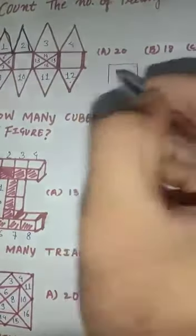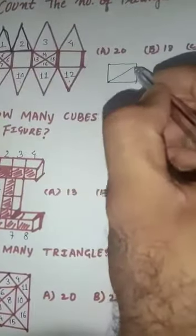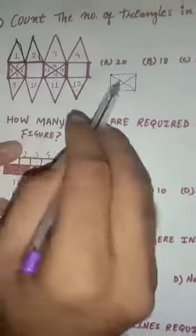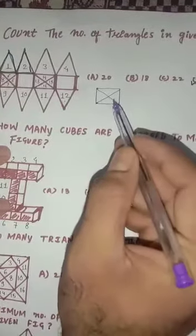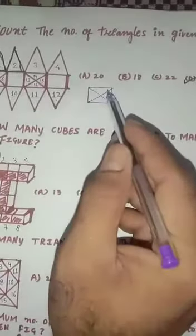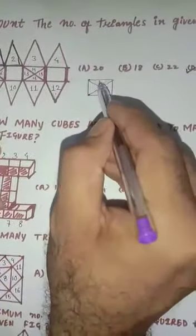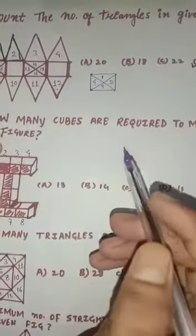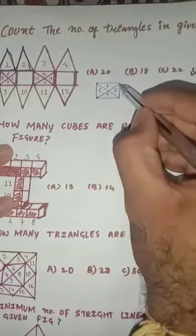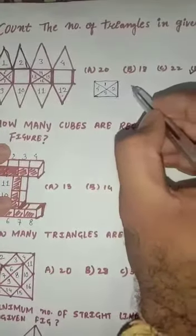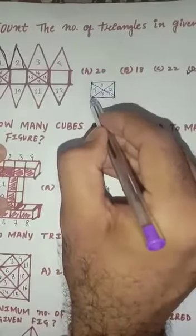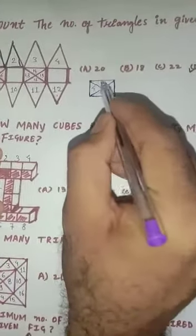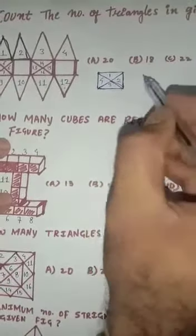So let's take this cube — it is divided into two parts. I've taken the same figure here and trying to find out how many triangles are possible. We have already taken triangles 13, 14, 15, and 16 — those four. But there are more: this is one hidden triangle, this is 2, this is 3, and this is 4.